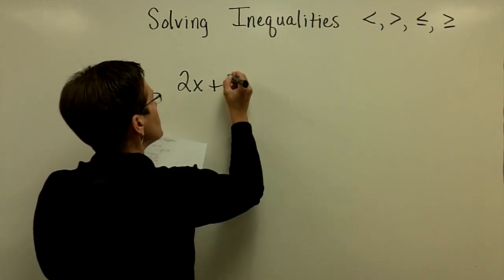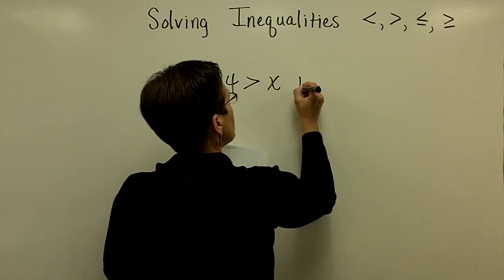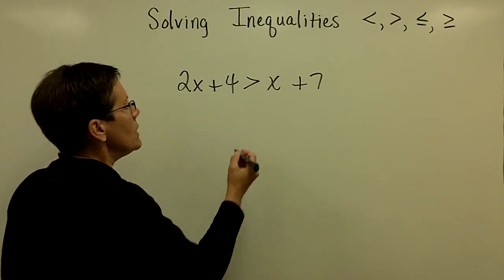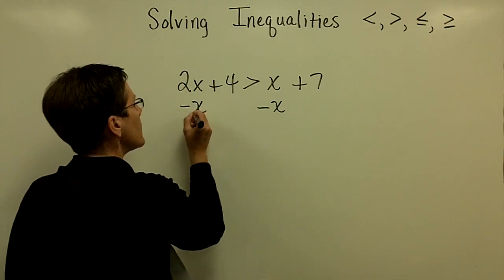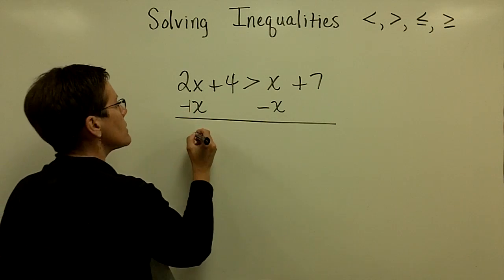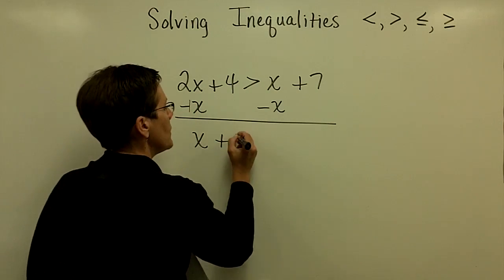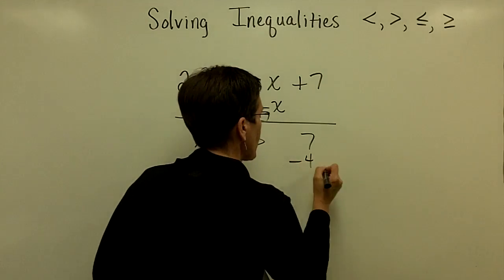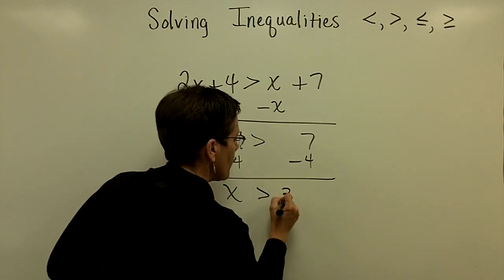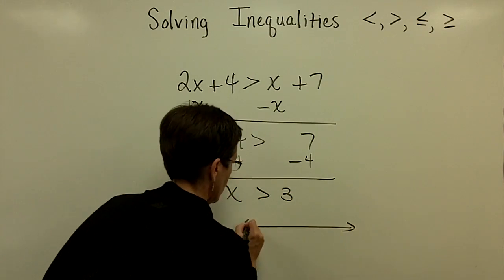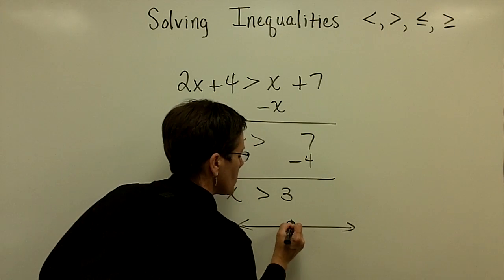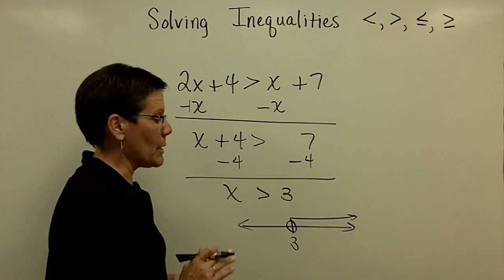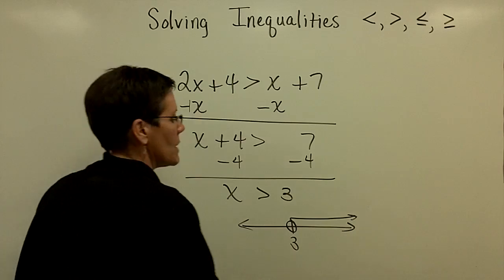So let's solve 2x plus 4 is greater than x plus 7. I want to solve for the variable x, so I'm going to use the addition principle to get x alone. I'm going to subtract x from both sides, so 2x minus 1x is 1x plus 4. Now I want to get x alone, so I subtract 4 from both sides, and I have x is greater than 3. On a number line, I would stick a 3 on here with an open circle and point my arrowhead to the right, because x is greater than 3.